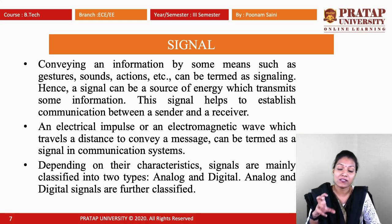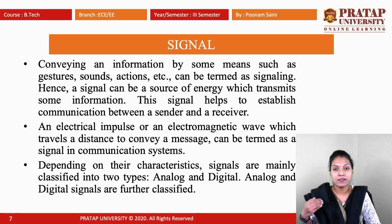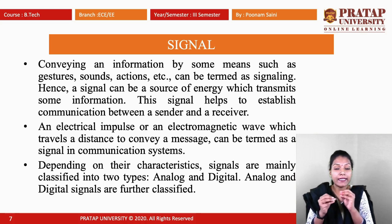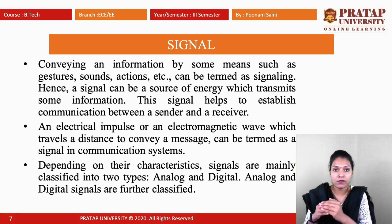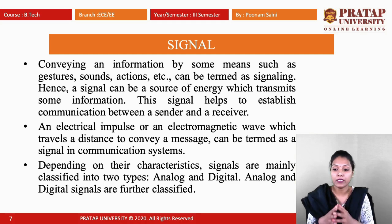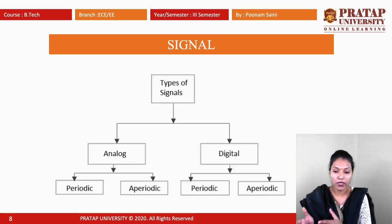The signaling process plays a very key role in communication. An electrical impulse or an electromagnetic wave which travels a distance to convey a message can be termed as a signal in a communication system. Depending on their characteristics, signals are mainly classified into two types: analog signals and digital signals.